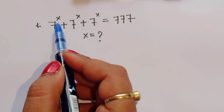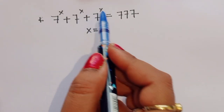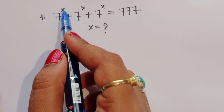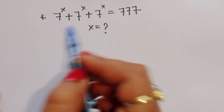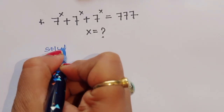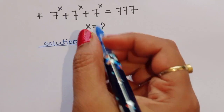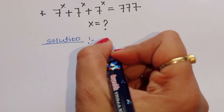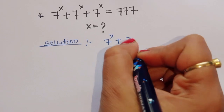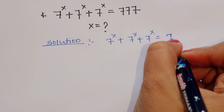The question is: given 7 power x plus 7 power x plus 7 power x is equal to 777. We have to find out the value of x. This is a very interesting question — let's see the solution.